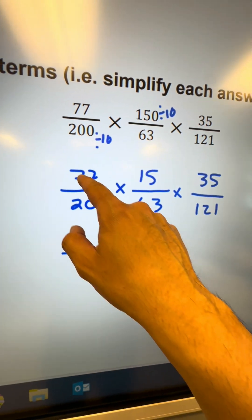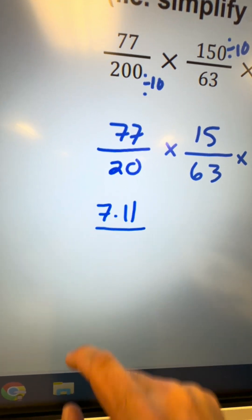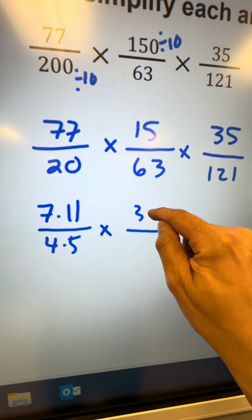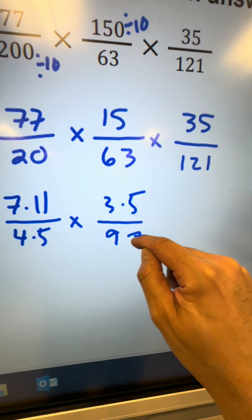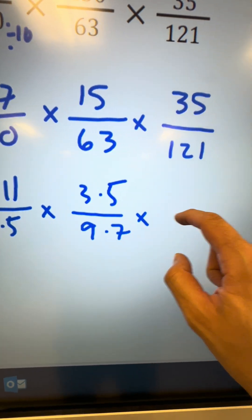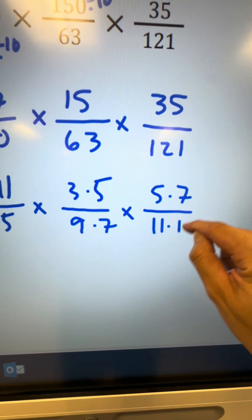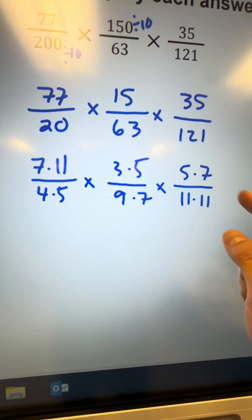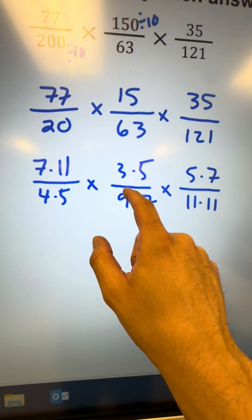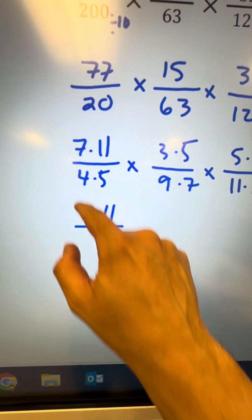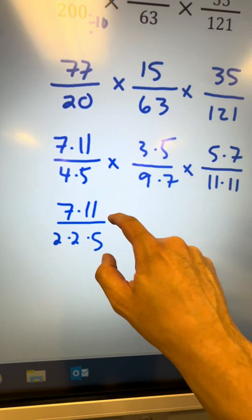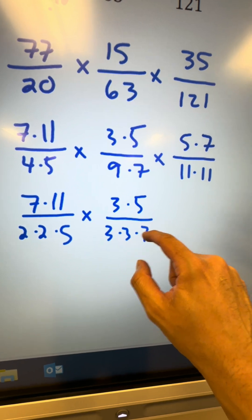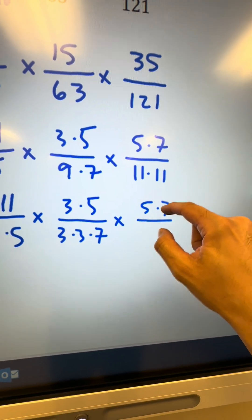Now do the prime factorization of each number. 77 is 7 times 11; 20 is 4 times 5; 15 is 3 times 5; 63 is 9 times 7; 35 is 5 times 7; 121 is 11 times 11. Most of these are prime except 4 and 9. So rewrite: 77 stays as 7 times 11; 20 becomes 2 times 2 times 5; 15 stays as 3 times 5; 9 becomes 3 times 3, bring down the 7; and 35 and 121 stay as prime products.